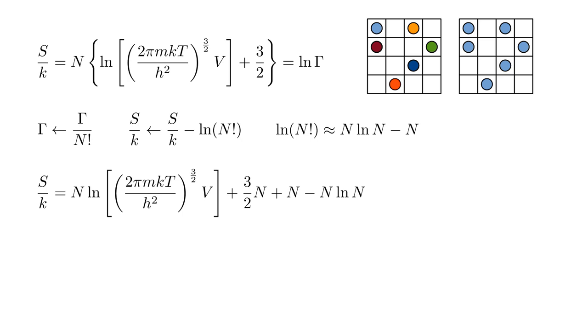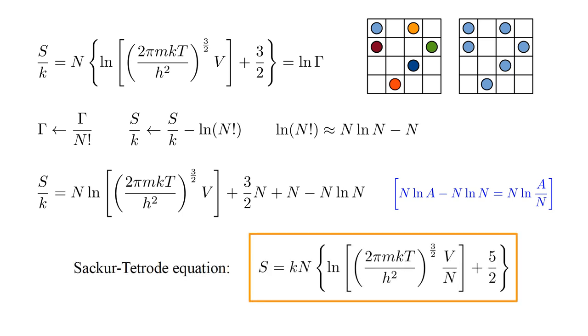We add n minus n log n to our formula. We can combine the second and third terms into a single five-halves n term. For the log terms, we use n log a minus n log n equals n log a over n. And multiply through by Boltzmann's constant to arrive at our final result, called the Sackur-Tetrode equation, independently developed by Otto Sackur and Hugo Tetrode in 1912.